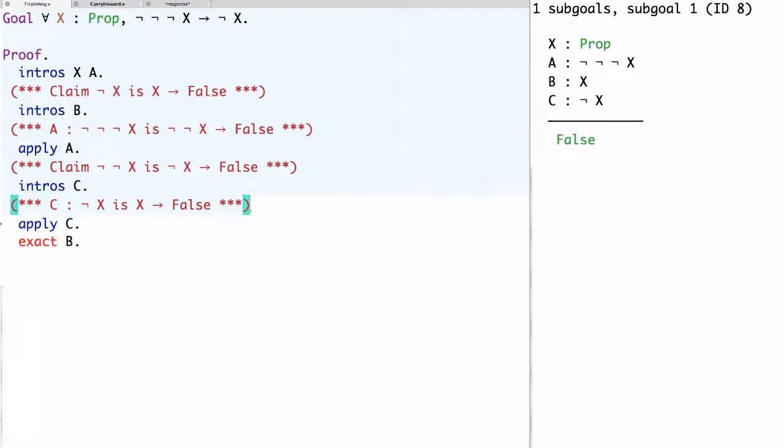Now let's go back before the apply c. At this point we were trying to prove false, and we had these three assumptions a, b, and c. Now it's clear that if we apply c to b, we have a proof of false, because c is a proof of x implies false, and b is a proof of x. So, in fact, we could have finished the proof then, by simply saying, exact c b.